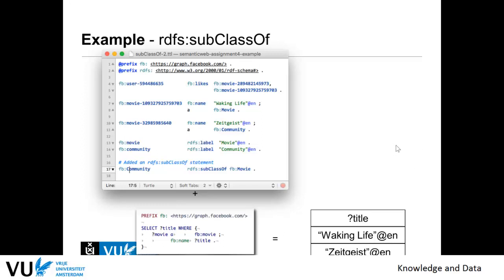Using some knowledge, we have successfully enriched this RDF version of the Facebook dataset because we linked the community concept with the movie concept via a subclass-of mapping relation.